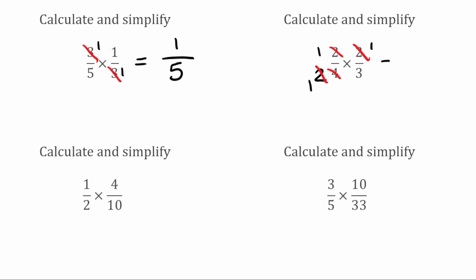Now we multiply through. On the top we've got 1 times 1, which is 1. And on the bottom we've got 1 multiplied by 3, which is 3. So that one fully simplified would be 1 third.